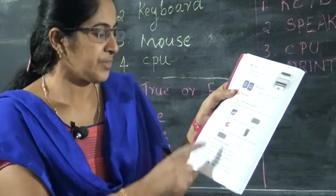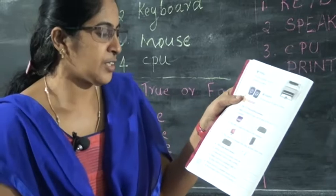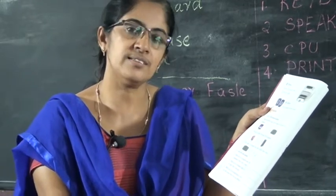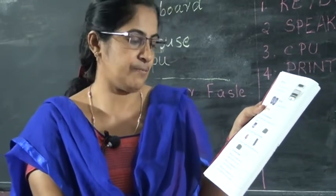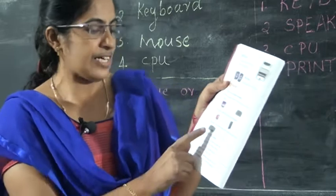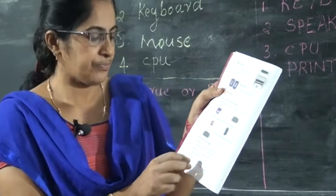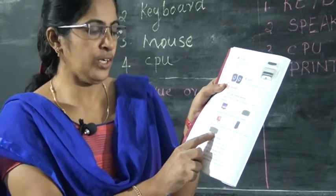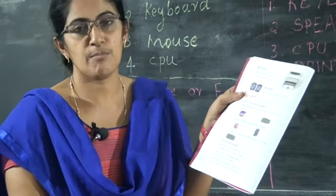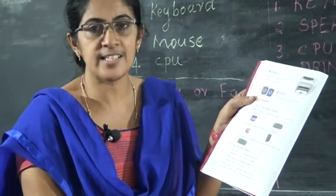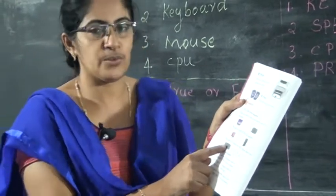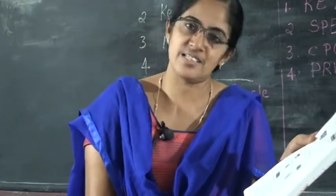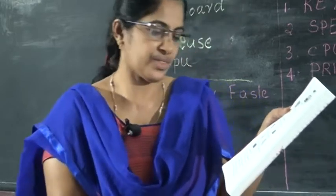Third question: this part of the computer has many buttons called keys. Two answers are given: keyboard and mouse. What is the correct answer? The correct answer is keyboard. Keyboard has many buttons called keys.